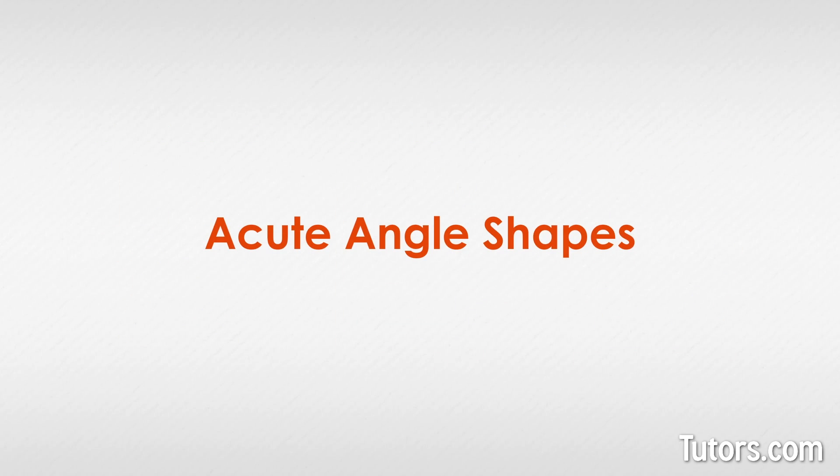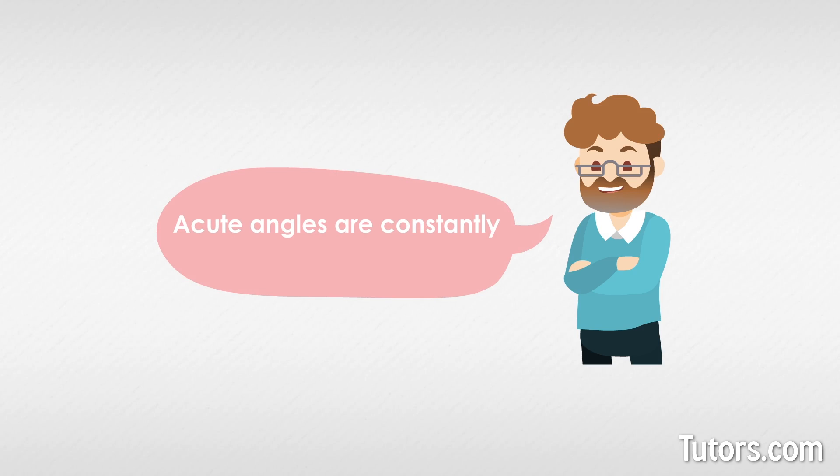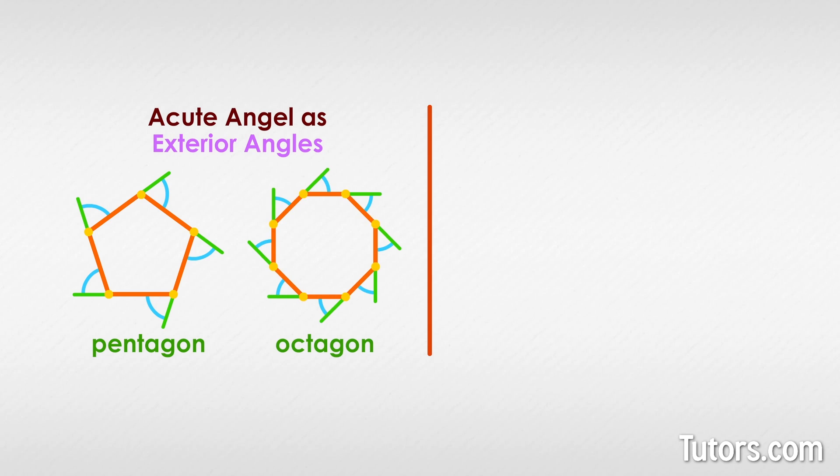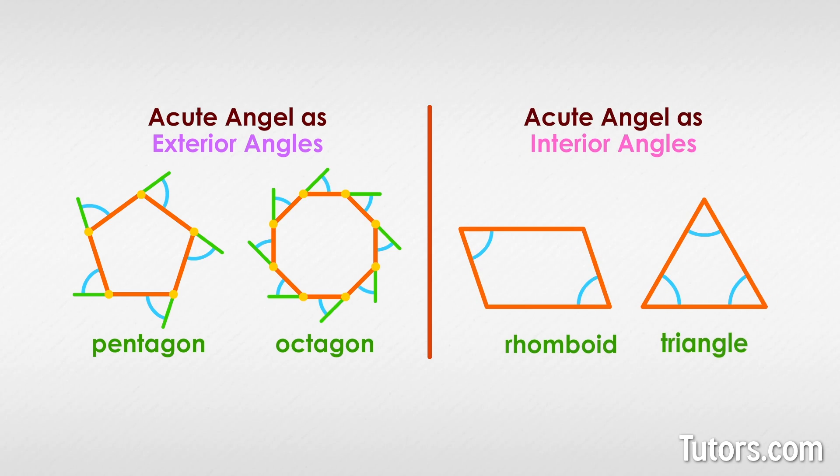Acute angle shapes: acute angles are constantly popping up in geometry. You can find acute angles as exterior angles in shapes that have five or more vertices, like pentagons and octagons, and you can find acute angles as interior angles in shapes like rhomboids and triangles.